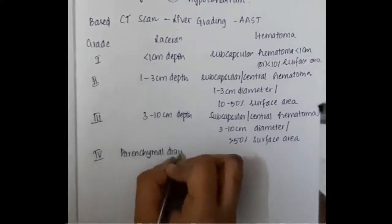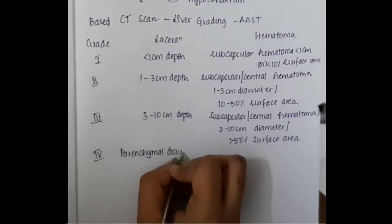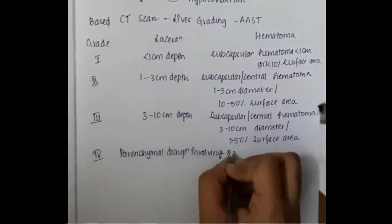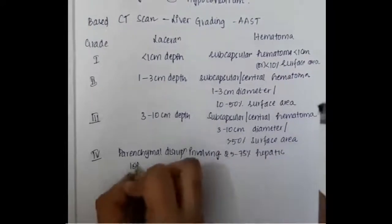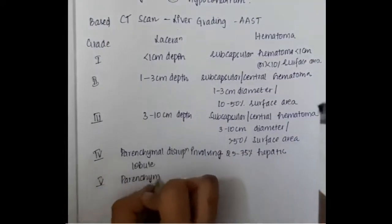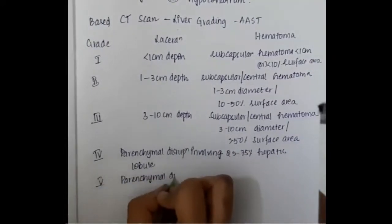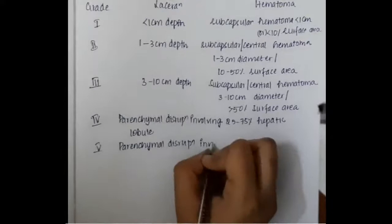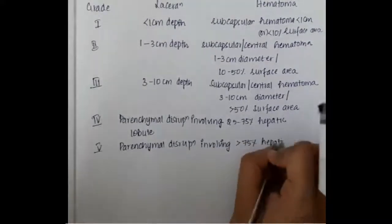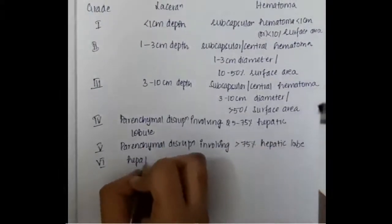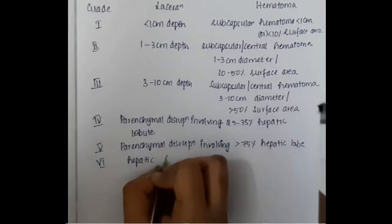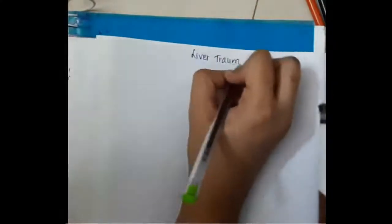In Grade 4, there is parenchymal disruption involving twenty-five to seventy-five percent of hepatic lobule. Grade 5 includes parenchymal disruption involving more than seventy-five percent of hepatic lobe. Grade 6 is complete hepatic avulsion.